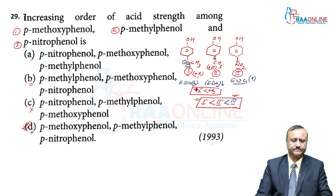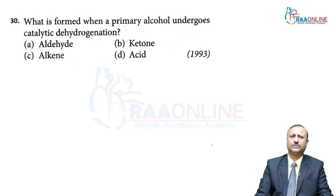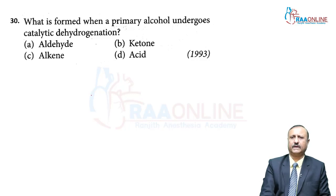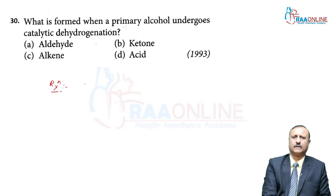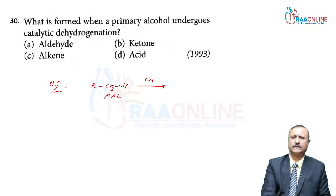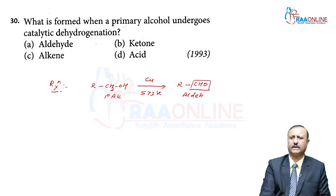Question 30, asked in NEET 1993: What is formed when a primary alcohol undergoes catalytic dehydrogenation? The reaction: RCH₂OH (primary alcohol) heated over copper catalyst at 573 K gives an aldehyde (RCHO) plus H₂. Primary alcohols are converted into aldehydes.